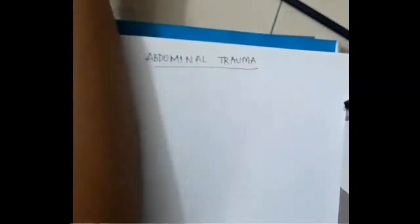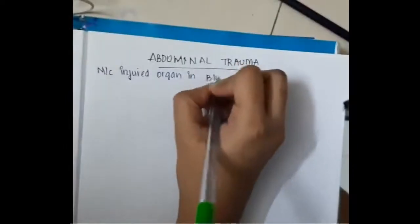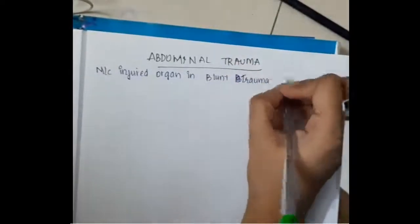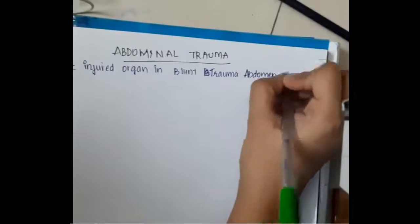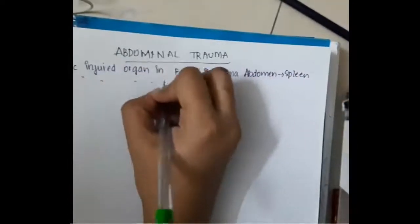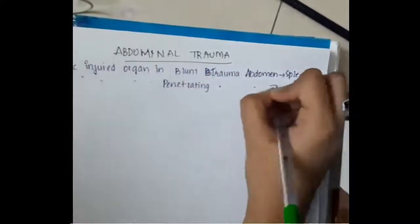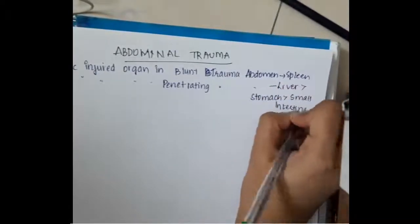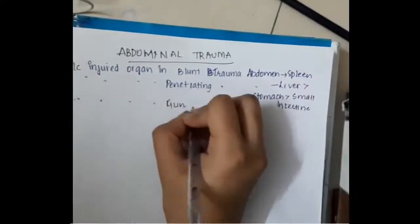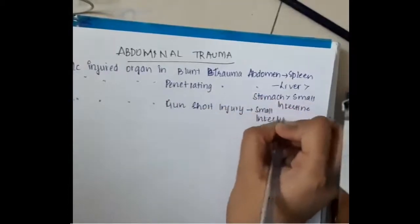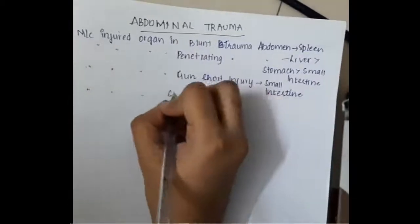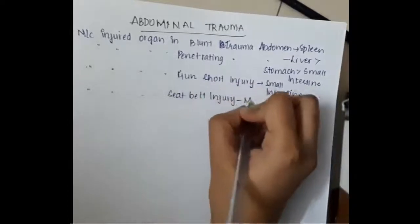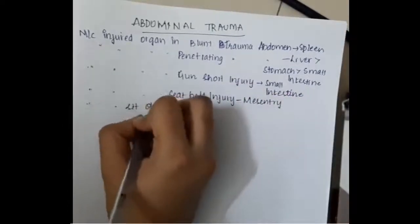Hello friends, let us now learn some important points about Abdominal Trauma. Most commonly injured organ in blunt trauma of abdomen is Spleen. Most commonly injured organ in Penetrating Trauma of Abdomen is Liver, followed by Stomach and then Small Intestine. Most commonly injured organ in Gunshot Injury is Small Intestine. Most commonly injured organ in Seat Belt Injury is Mesentery.